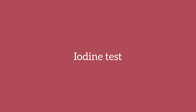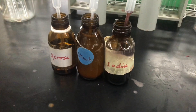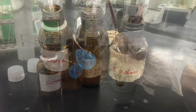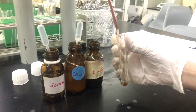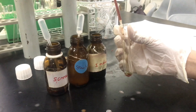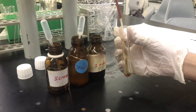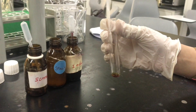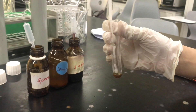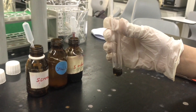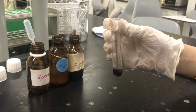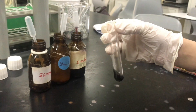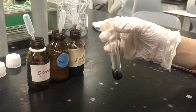Moving to the iodine test, which is going to show us the presence of starch. Add a few drops of iodine solution to the test tube, then add one mil of the sample solution. If it is starch, you are going to see an immediate change of color to a deep blue or black color.